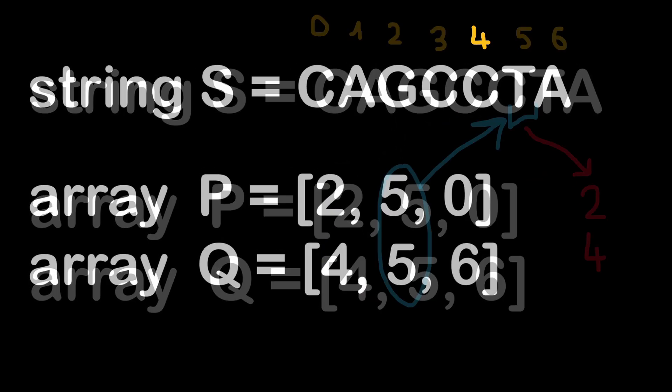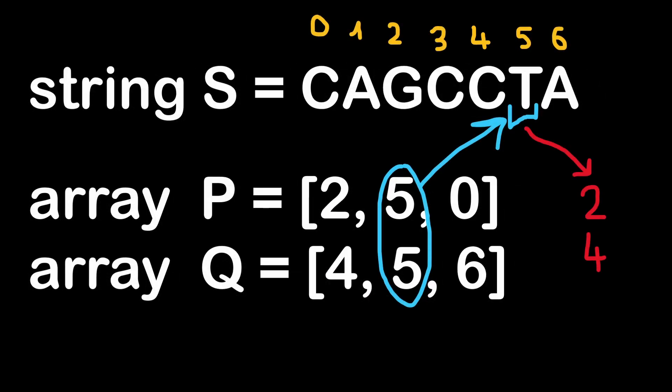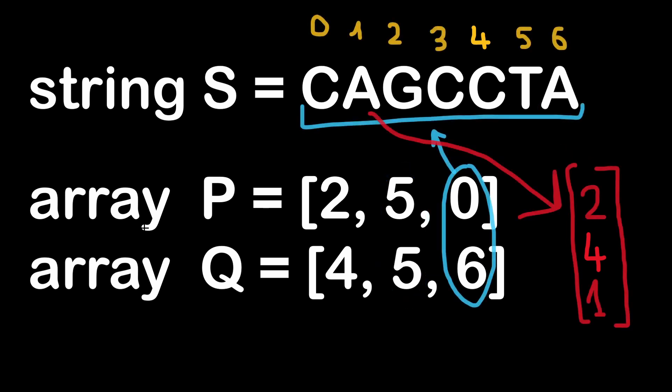Then we move on to the next couple of limits P and Q. Here we have an edge case where both values are the same: 5. The corresponding letter is T, which is at position 5 and has impact factor 4, so we add number 4 to our results array. Then for the next couple, P=0 and Q=6, which covers the whole string, the minimum impact factor is 1 for the letter A. At the end, the result array contains numbers 2, 4, and 1, which is what our solution function should return.